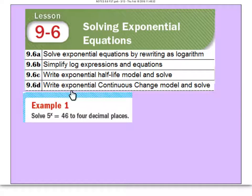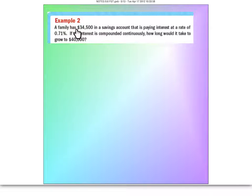In learning objective D, we're going to write exponential continuous change models and solve. So if we look at this, we have a family that has $34,500 in a savings account. It pays an interest rate of 0.71% a year. The interest is compounded continuously, so that's APERT.